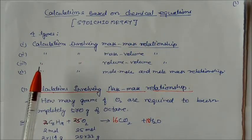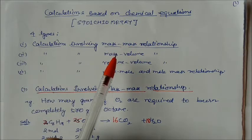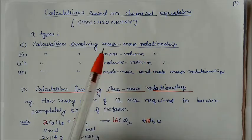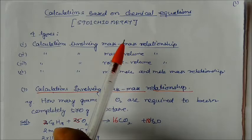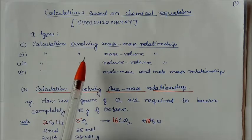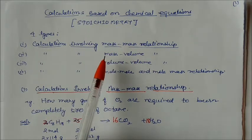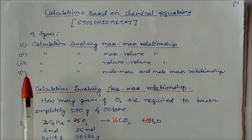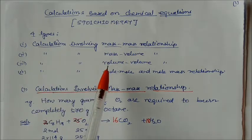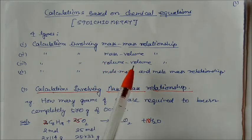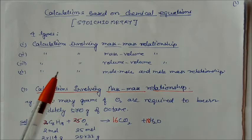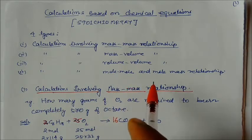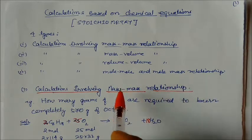The four types are: first, calculation involving mass-mass relationships, where mass of one substance and mass of the reactant is given. Second, calculation involving mass-volume relationships. Third, calculation involving volume-volume relationships, which deals with relationships in terms of volume. Fourth, calculation involving mole-mole and mole-mass relationships.